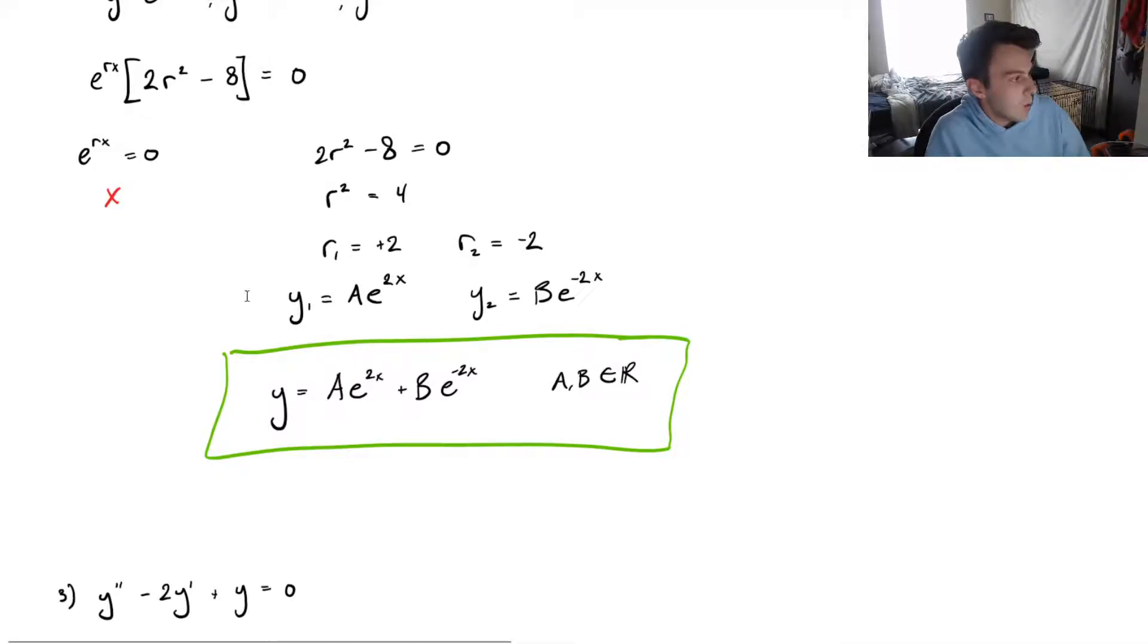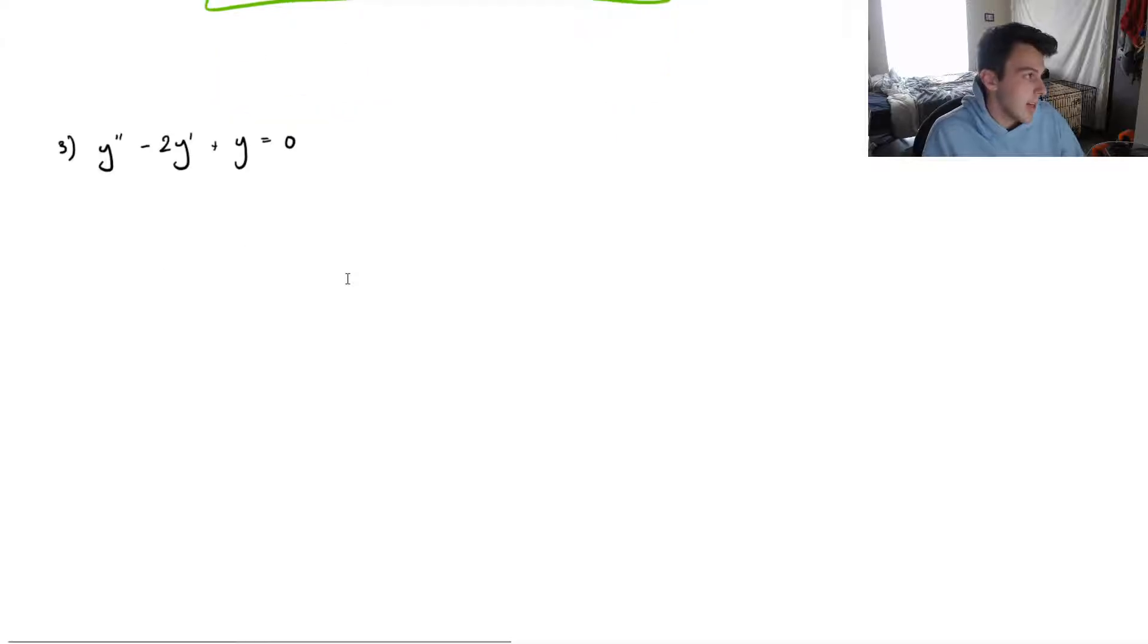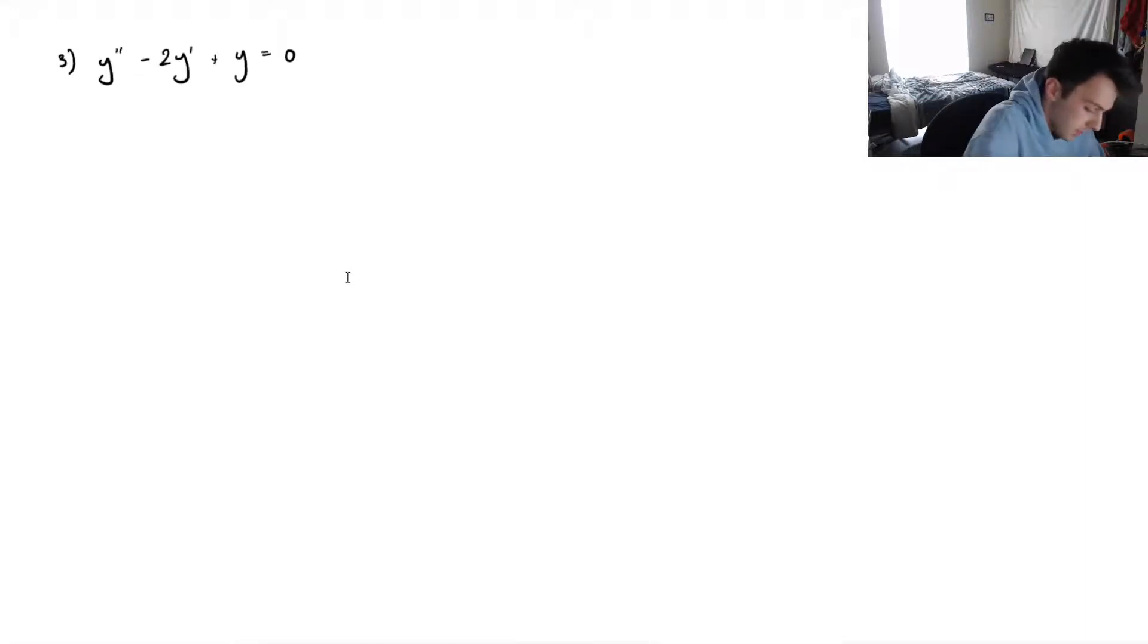And we're going to do one final example. And this is just of the last case, so you can guess that our b squared minus 4ac is going to be equal to zero in this case. So, let's do this.